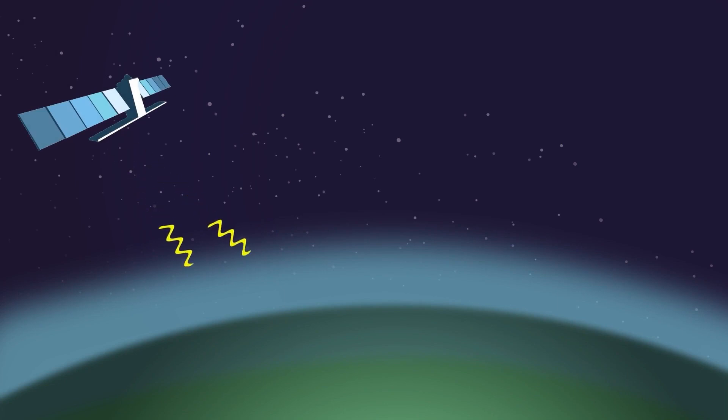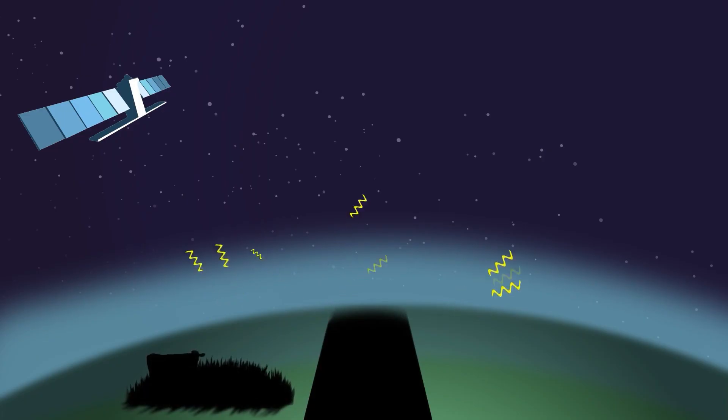With radar, you can locate objects. But how can they be distinguished? In addition to the distance, the radar sensor on the satellite also measures how much of the microwave signal it emits is scattered back to it.